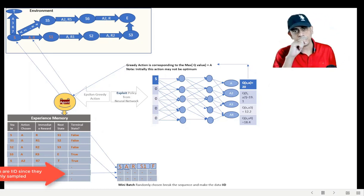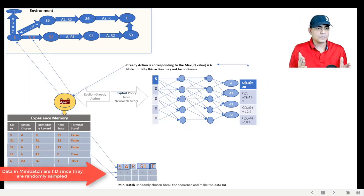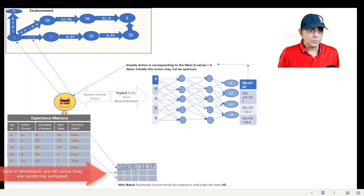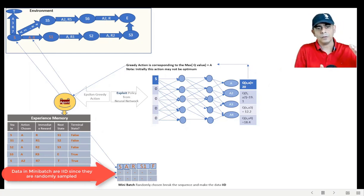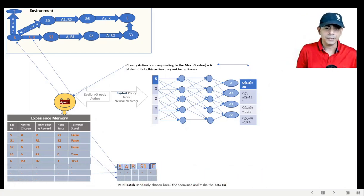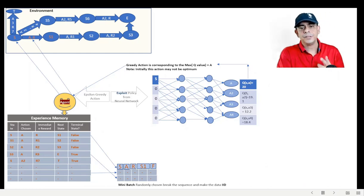So to break that sequence, the interdependencies between the data, and to make it random, we simply take random values from the experience memory and store it in a batch which we call a mini-batch process. We know that neural networks are trained on a mini-batch, so it serves two purposes: we created our batch, we have also broken the interdependencies within the data, made it IID.